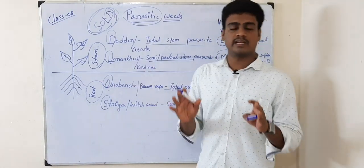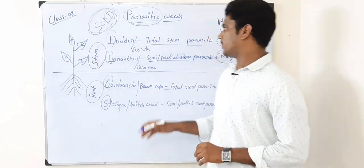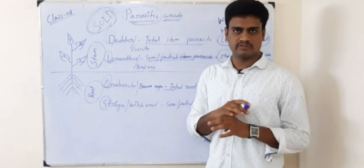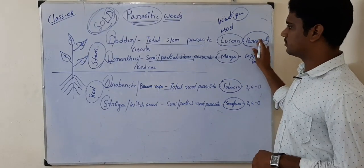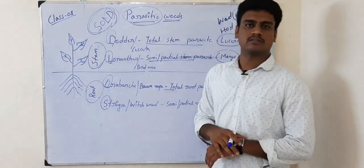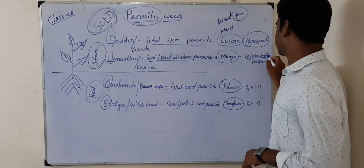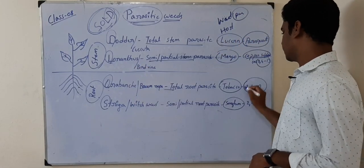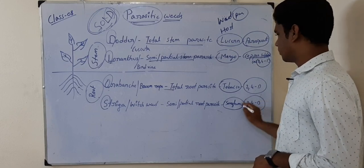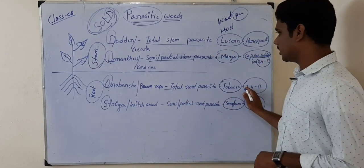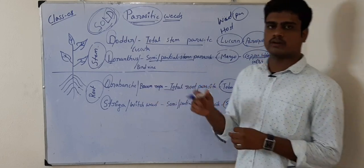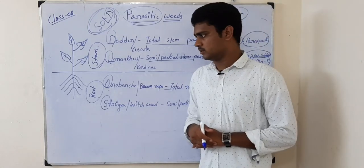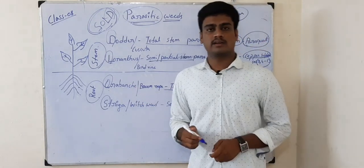Now let us see the management practices. For the other parasitic weeds, especially we use 2,4-D herbicide. But for the dodder weed alone, we go for paraquat — paraquat is a non-selective herbicide which will kill all the plants. Paraquat is the herbicide used for dodder at a quantity of 1 kg per hectare. Copper sulphate or 2,4-D is used for Loranthus. To control Orobanche, we use 2,4-D. For Striga also, we use 2,4-D.